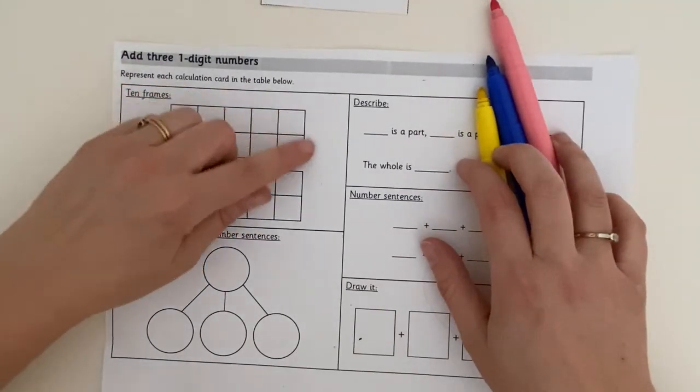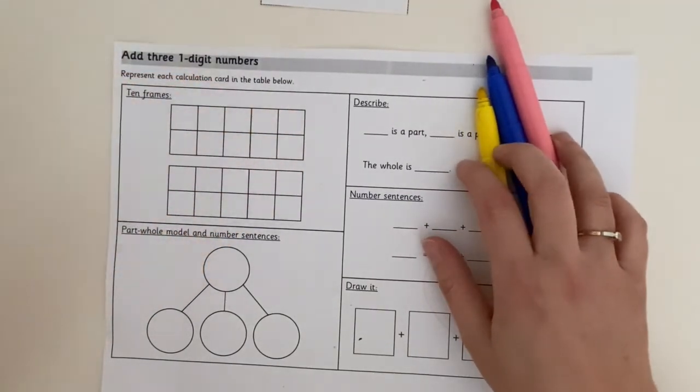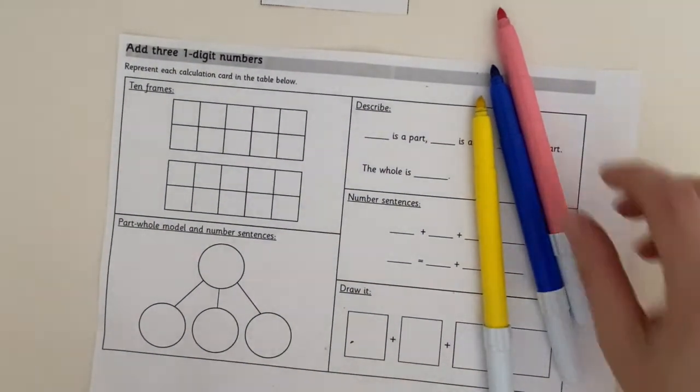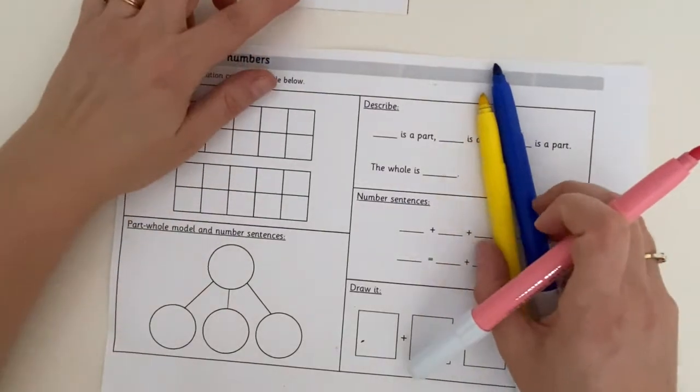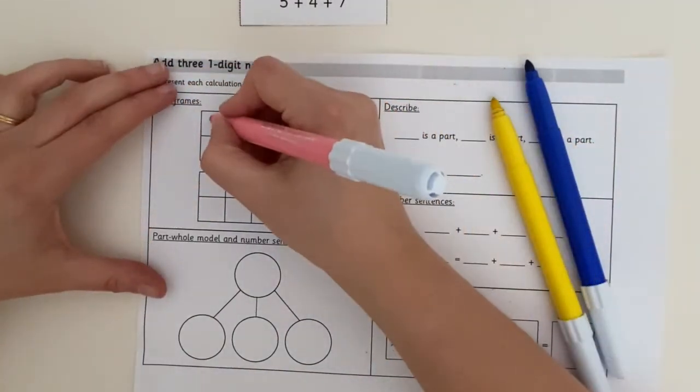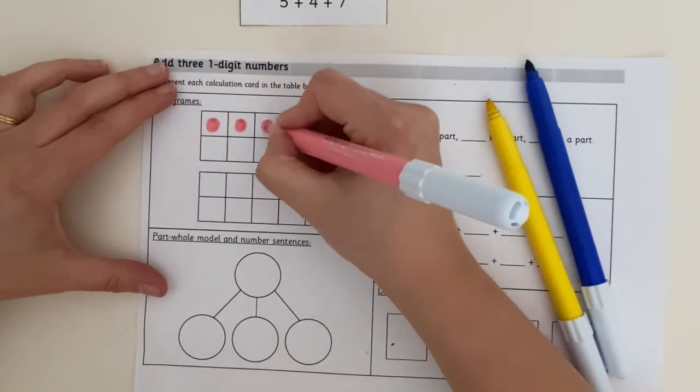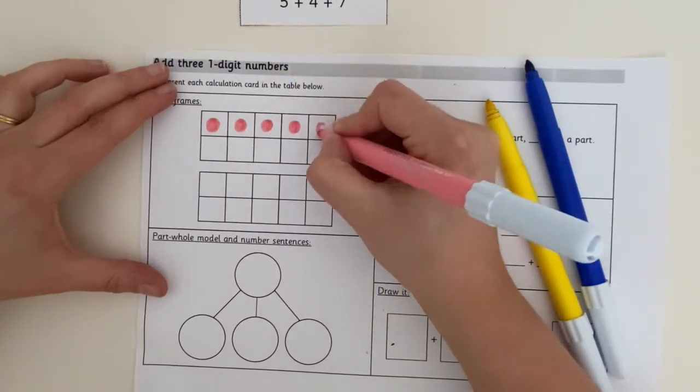And what we're going to have a look at first are the tens frames here. Remember we have got 10 squares in this frame and we've got two tens frames there to have a look at. So the first thing we're going to do is we are going to do five. I'm going to use the pink for this one and I'm going to colour in five. One, two, three, four, five.